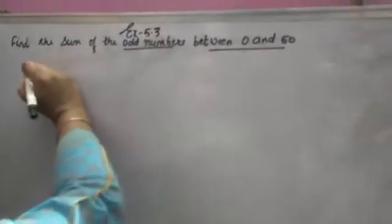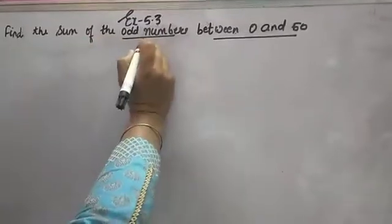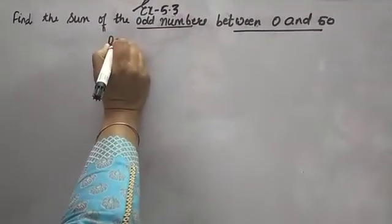Dear students, CXA 5.3 question number 14. Very important question. Find the sum of the odd numbers between 0 and 50.